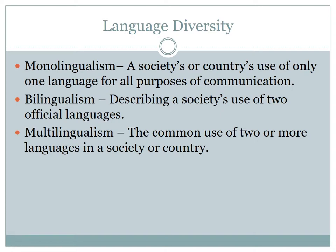Even monolingualism isn't universal — for example, in Japan there are more than half a million people who still speak Korean. Then we have bilingualism — the prefix bi — describing a society's use of two official languages. Canada is officially bilingual, which is a reflection of the colonial division within the country between France and Great Britain.